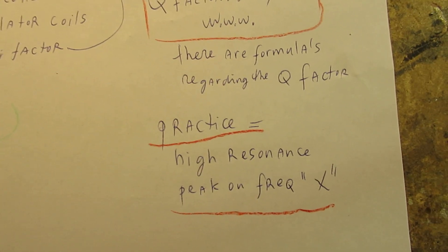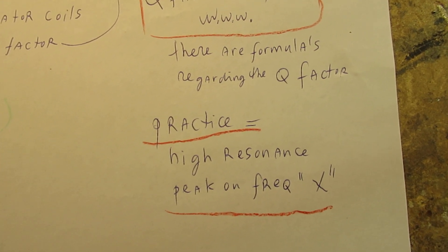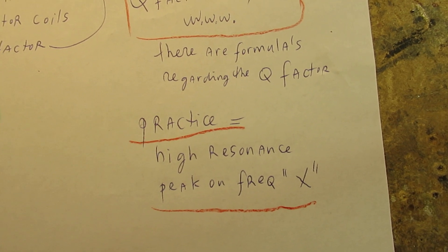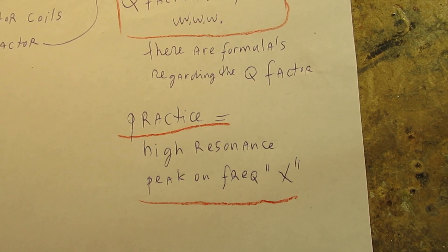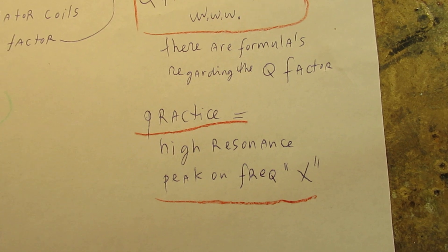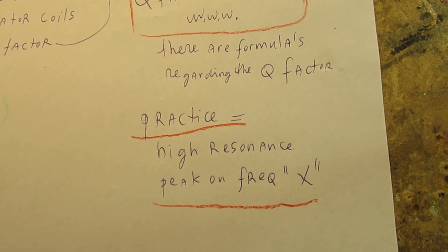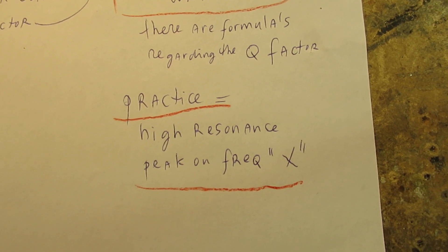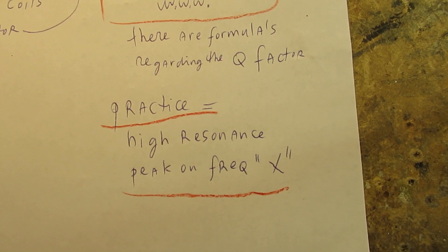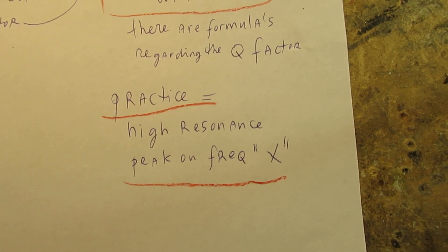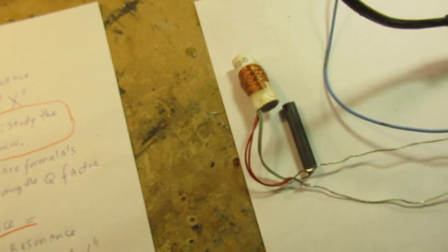The practice is that there is a kind of high resonance on a certain frequency, where the coil works at its best. And I don't want to intermediate peak resonance with the quality factor. But in general, there is a kind of relation between the quality of a coil and how good such a coil can generate or receive a certain frequency.